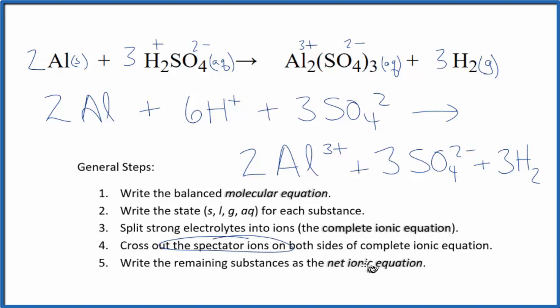Now we can cross out spectator ions. They appear on both sides of the ionic equation. As I look at this, the only things that appear in the reactants and up here in the products are these three sulfate ions here.